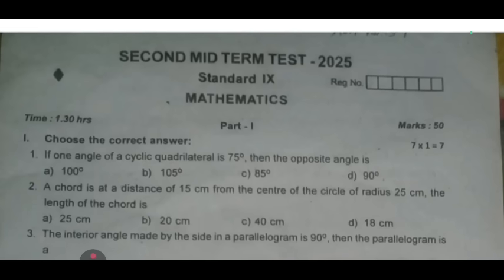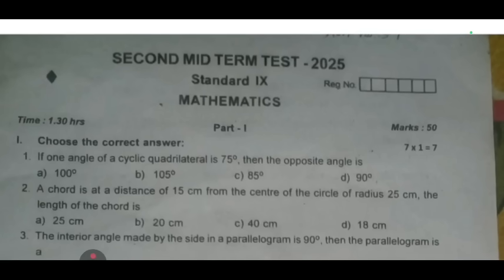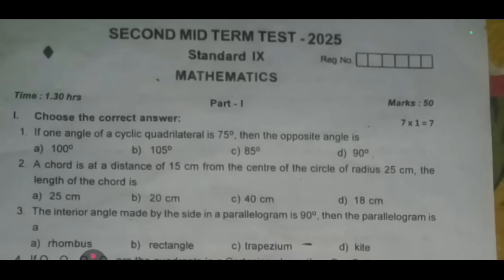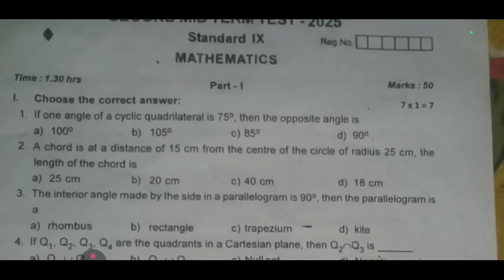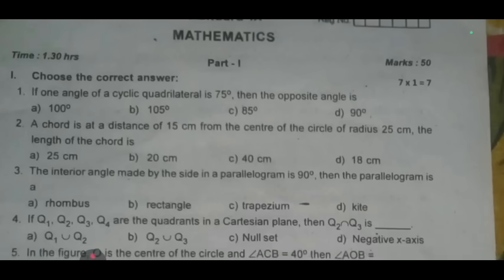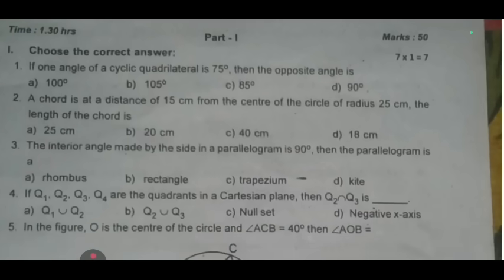Please check the answers. So choose first one: if one angle of a cyclic quadrilateral is 75 degrees, then the opposite angle is dash. Second one: a chord is at a distance of 15 cm from the center of the circle of radius 25 cm. The length of the chord is dash. Third one: the interior angle made by the side in a parallelogram is 90 degrees, then the parallelogram is a dash.